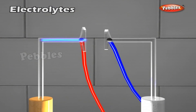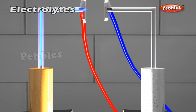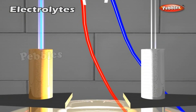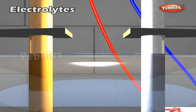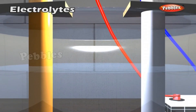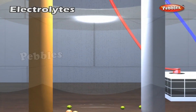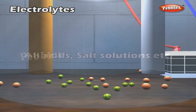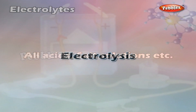Electrolytes: Solutions of certain substances in the dissolved or fused state decompose chemically during the passage of electricity. They are called electrolytes. Examples include all acids, salt solutions, etc.